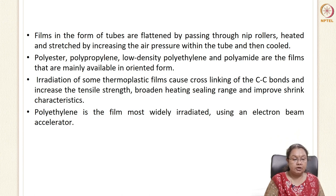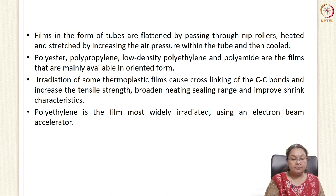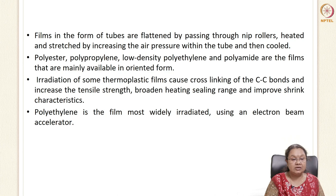Films can also be developed in the form of tubes, which are then flattened by passing through nip rollers. These are heated and stretched by increasing the air pressure within the tube in a blowing action. Polyester, polypropylene, low density polyethylene, and polyamide are the main films oriented to increase their functional properties. Irradiation is another method to increase the properties of thermoplastic films — it increases cross-links between carbon-carbon bonds, which in turn increases tensile strength, heat sealing range, and shrink characteristics. Polyethylene is very commonly irradiated using an electron beam accelerator.